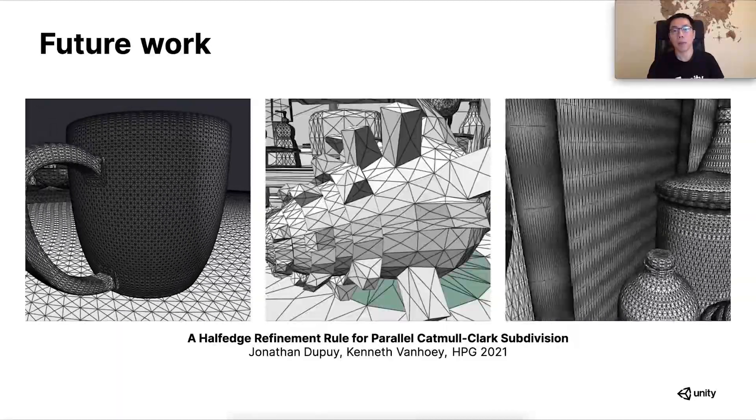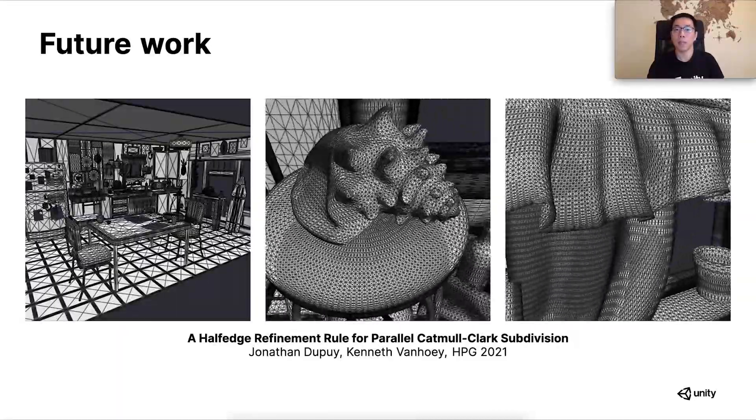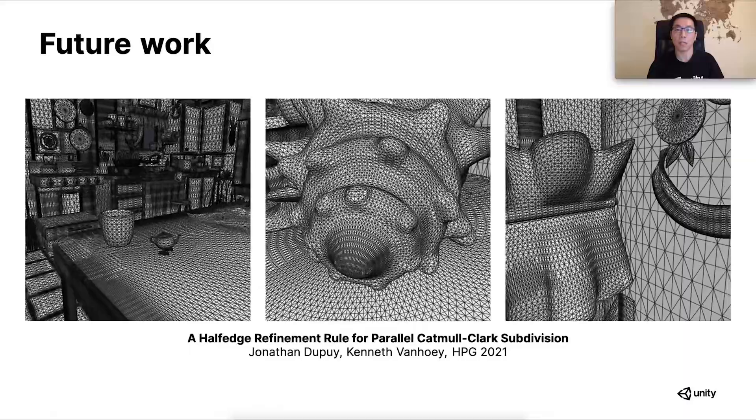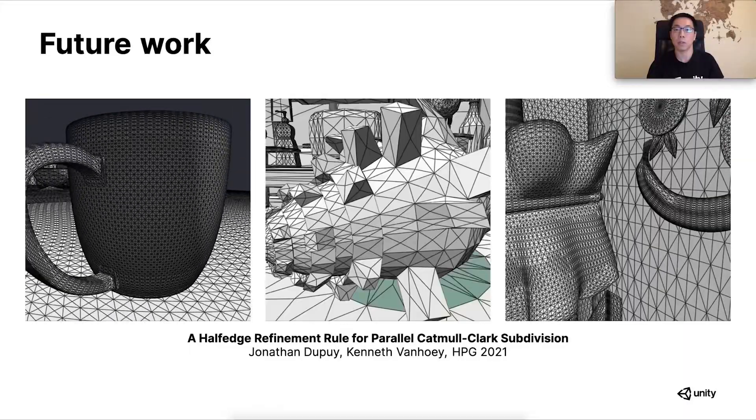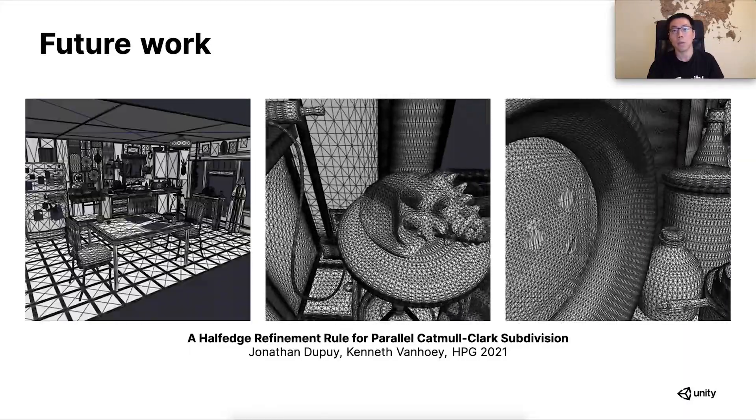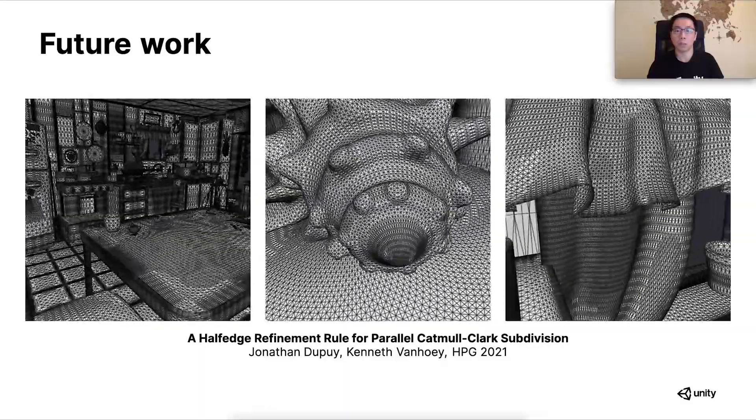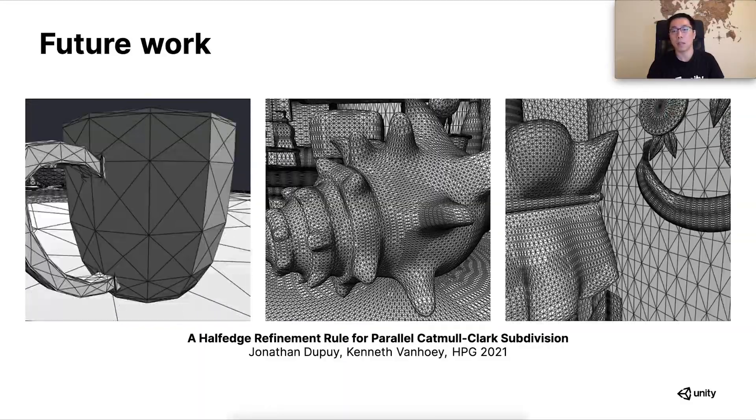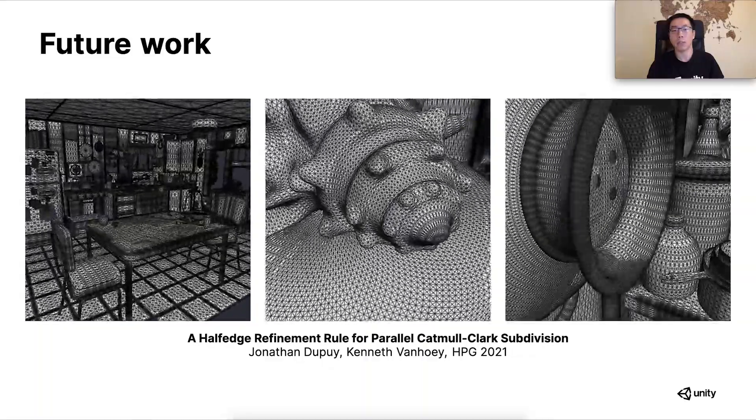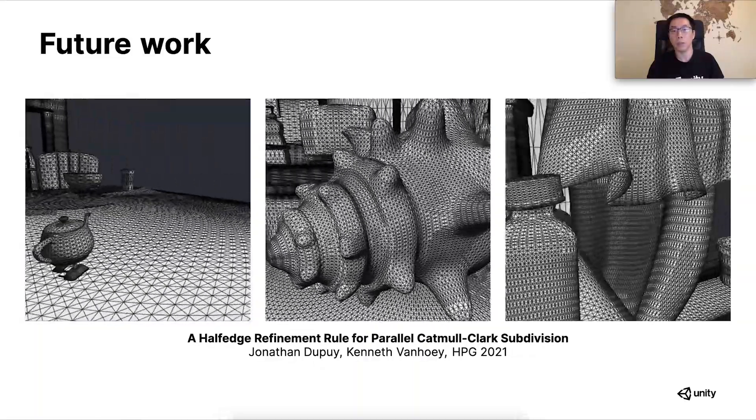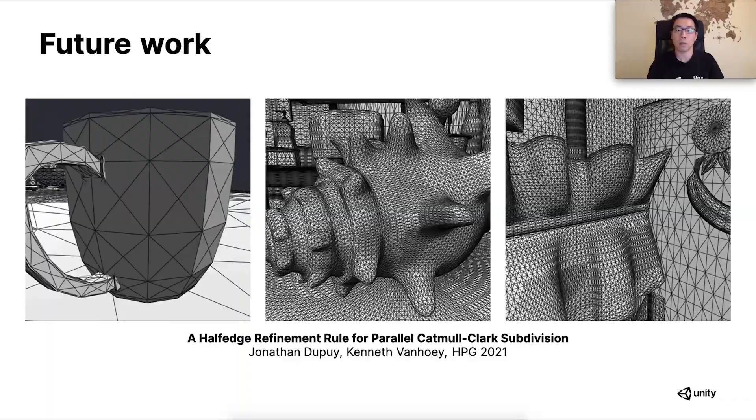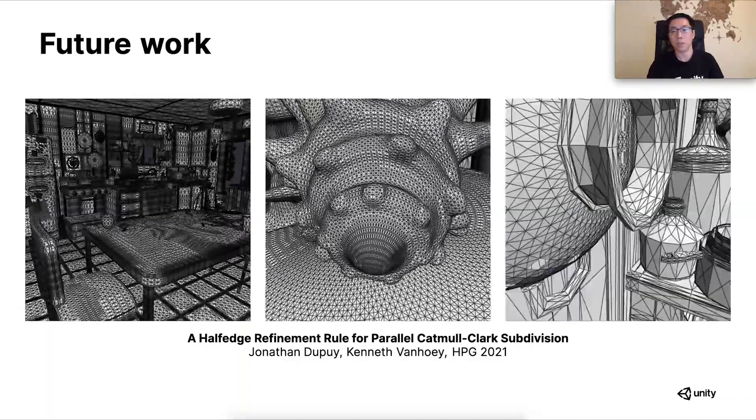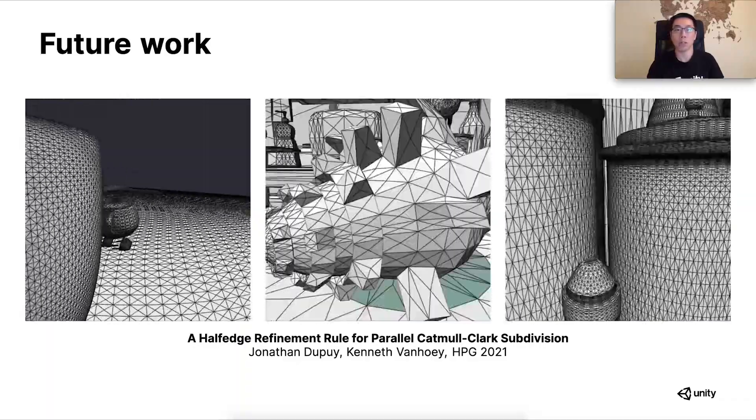For example, an advantage of CBTs is that they can also allow tessellating arbitrary subdivision surfaces. Here is a work-in-progress demonstration. It shows Catmull-Clark subdivision surfaces adaptively tessellated on the GPU in real-time in Unity thanks to CBTs. You can check out their latest HPG talk for more information on this.